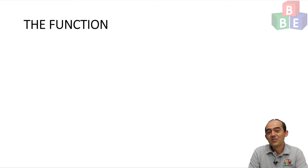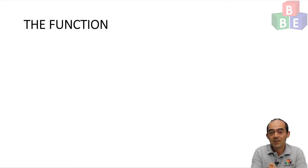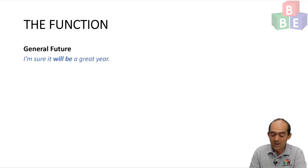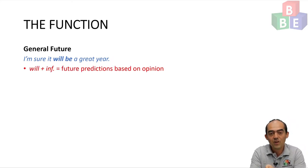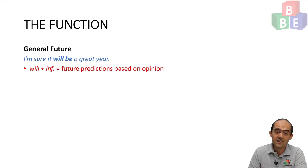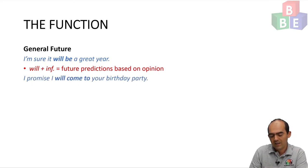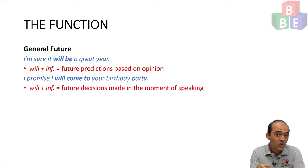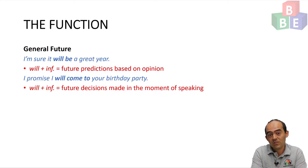To start off with, let's revise the basic future tenses. You will remember: will, be going to, and present continuous from our previous video, which you can check out in the link below. For general future, we use, for example, 'I'm sure it will be a great year' — will plus infinitive for a future prediction based on my opinion. Alternatively, 'I promise I will come to your birthday party' — will for a future decision or promise made at the moment of speaking. Future decisions might be promises, offers, requests, or threats.